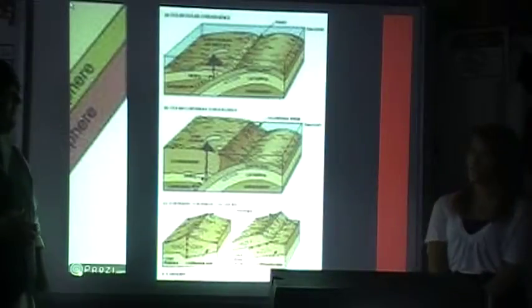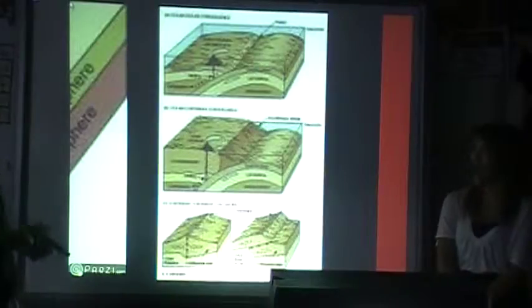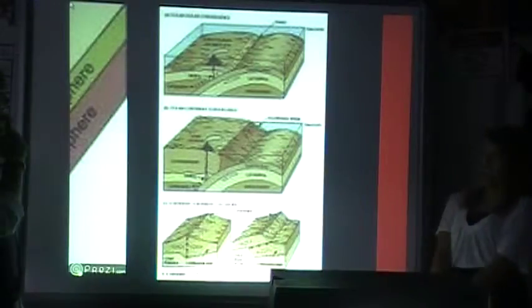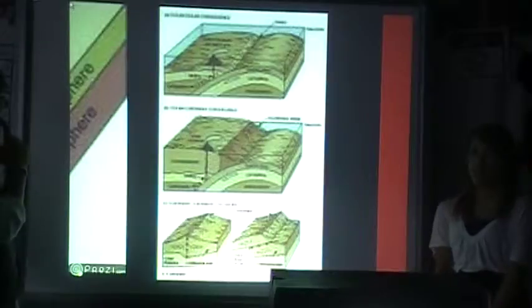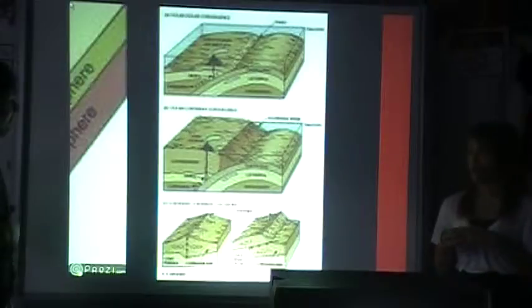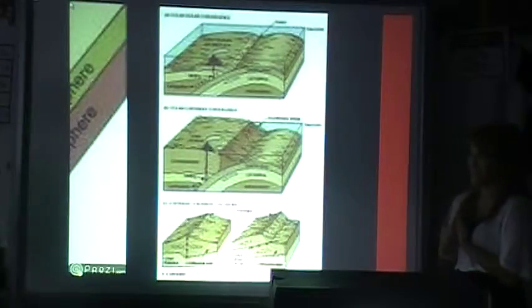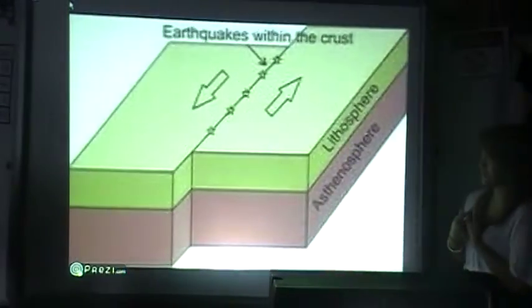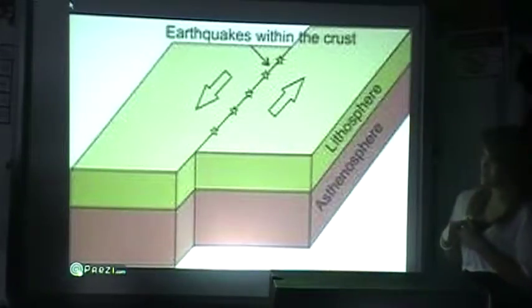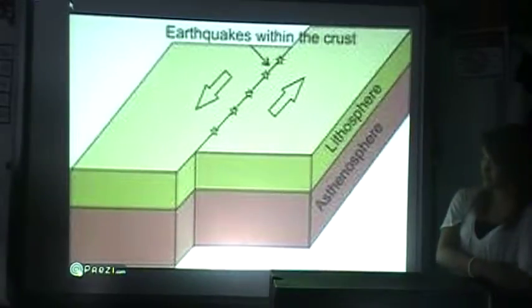This is the convergent movement, where two tectonic plates collide together. Either one goes up on top of the other, or they both go down, or they go together and form a mountain. The other type is a transform movement, and it's when two plates rub against each other, creating an earthquake.